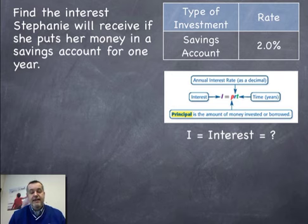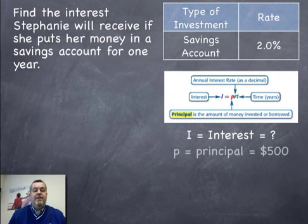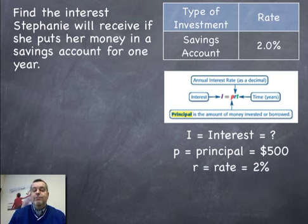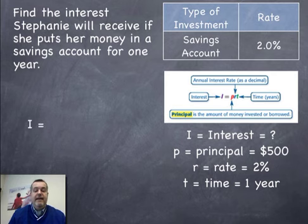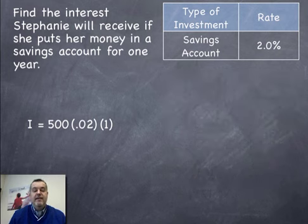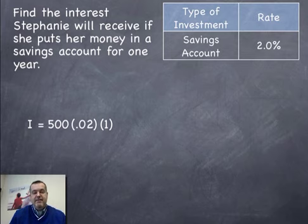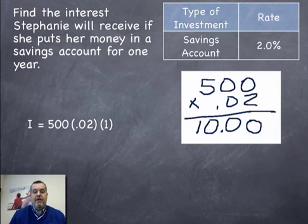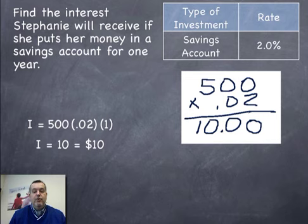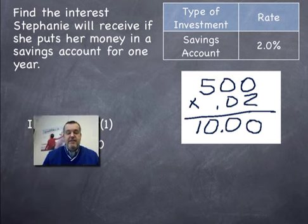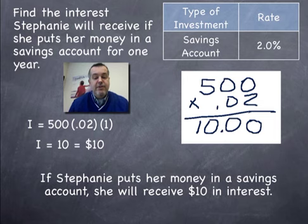I equals interest, which we don't know — that's what we need to figure out. P equals the principal, which is $500. R equals the rate, which is 2%, and T equals the time, which is one year. So I equals 500 times 0.02 times 1. Since anything times 1 equals itself, we multiply 500 times 0.02, which gives us 10. So I equals $10 — if Stephanie puts her money in a savings account, she will receive $10 in interest.